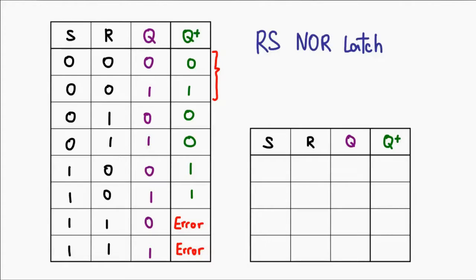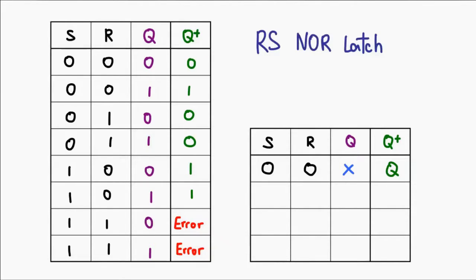Take for example the first two rows. We don't actually need to know the state of Q — we just need to know that the state of Q doesn't change. So we can actually express these two lines in one line. Essentially, we ignore the current state of Q. That's what the X means — we just say that Q+ equals Q. We can ignore the current value of Q because we don't need to know its actual value. The same applies for both having set on and having reset on — we don't care about the existing value, we just set it to either one or zero respectively.